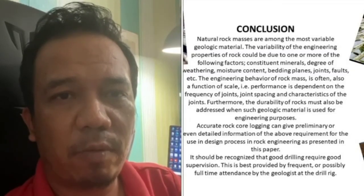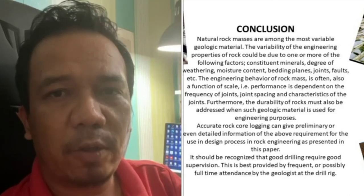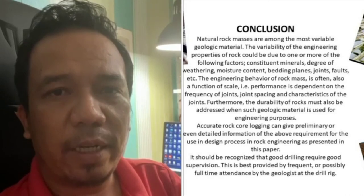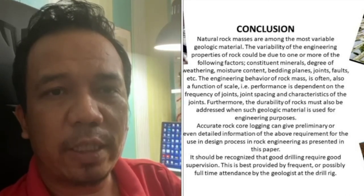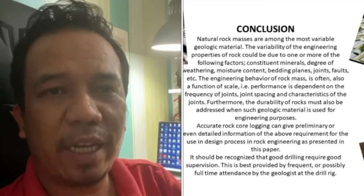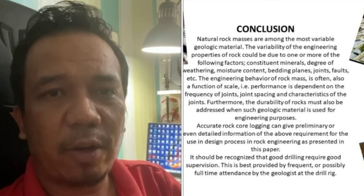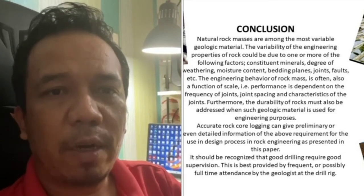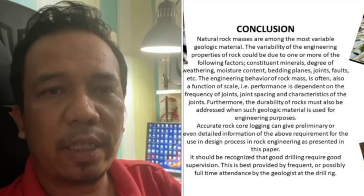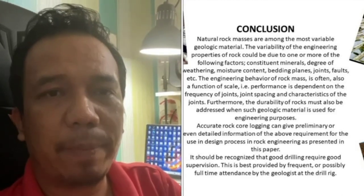In conclusion, natural rock masses are among the most variable geologic materials. The variability of engineering properties of rock can be due to constituent minerals, degree of weathering, moisture content, bedding planes, joints, and faults. The engineering behavior of rock mass is often a function of scale, depending on joint frequency, joint spacing, and characteristics of joints. Durability of rock must also be addressed when such geologic material is used for engineering purposes. Accurate rock core logging can provide preliminary or detailed information for use in the design process in rock engineering.